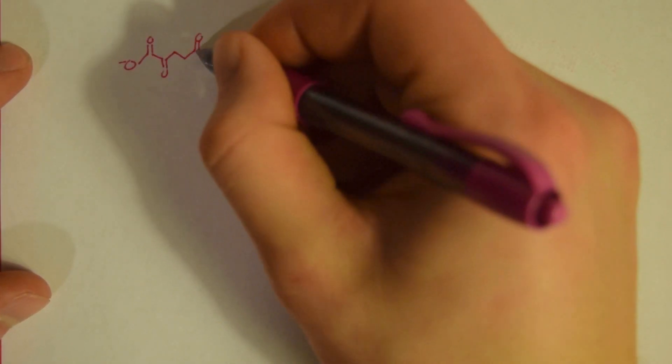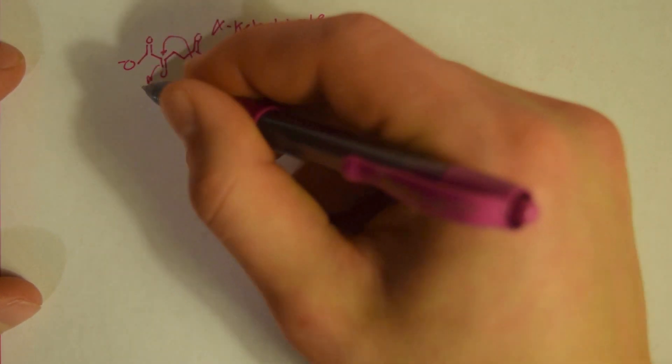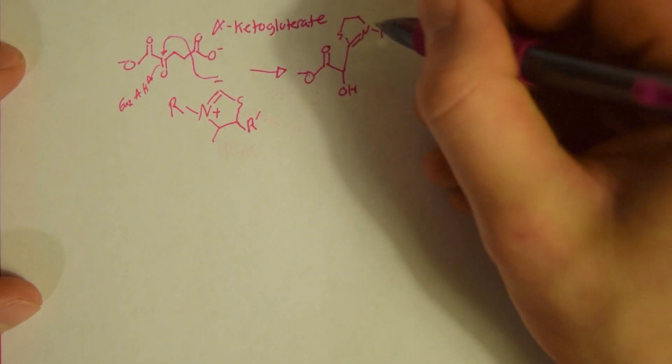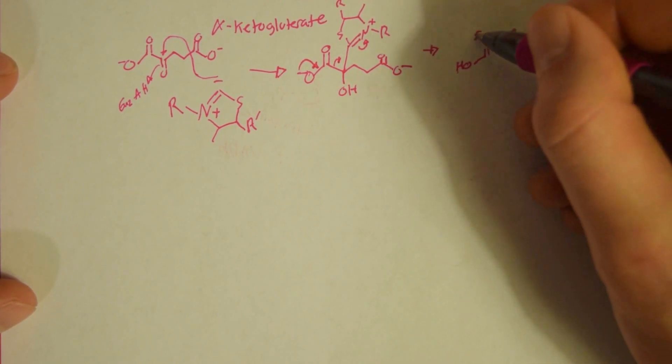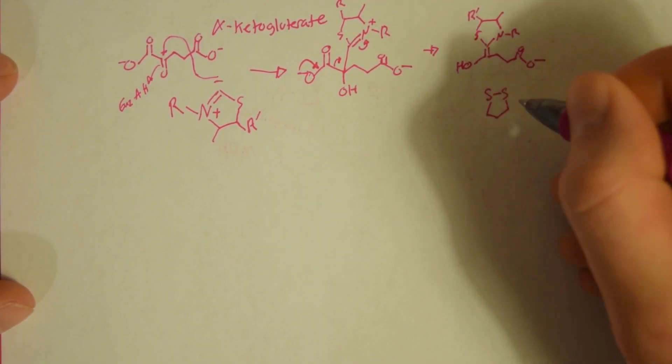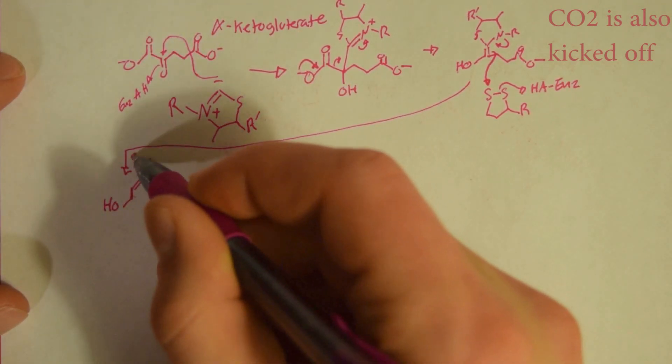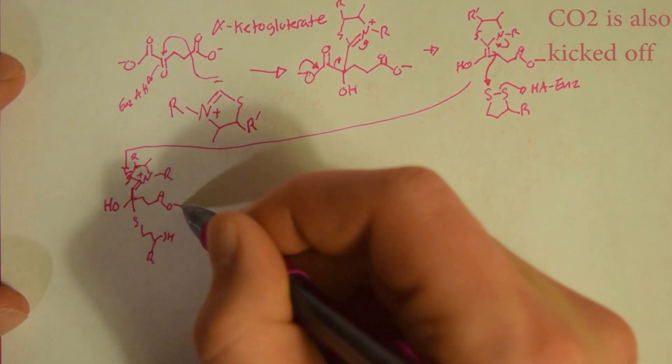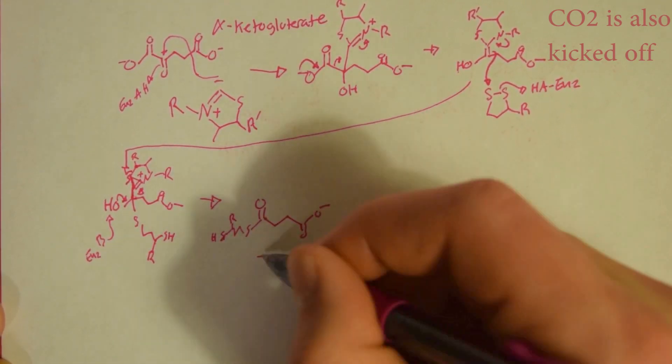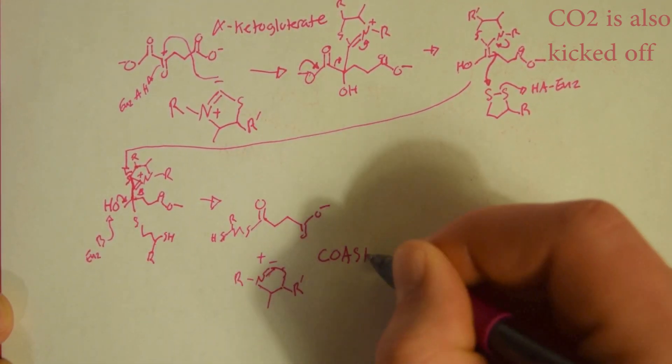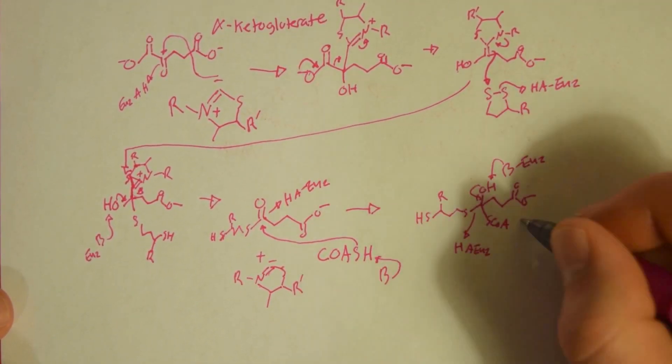So this next step with alpha-ketoglutarate can seem kind of long on paper, but really is the exact same mechanism as we did to get from pyruvate to get to acetyl-CoA. So it's going to involve a thiamine, a lipoamide, NAD+, and CoASH. At the end of this reaction, we're going to end up with succinyl-CoA.